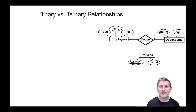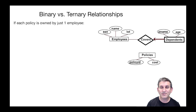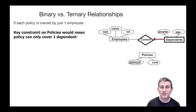Here again, we have a weak entity set — dependents — but now it's connected into a ternary relationship set. We have this relationship set 'covers,' and every dependent is connected via the covers relationship set to an employee and an insurance policy. So we have a separate entity called the policy. If we want to say that a policy is owned by just one employee, we'll connect policies to this entity set with an arrow saying each policy participates at most once in this relationship set.